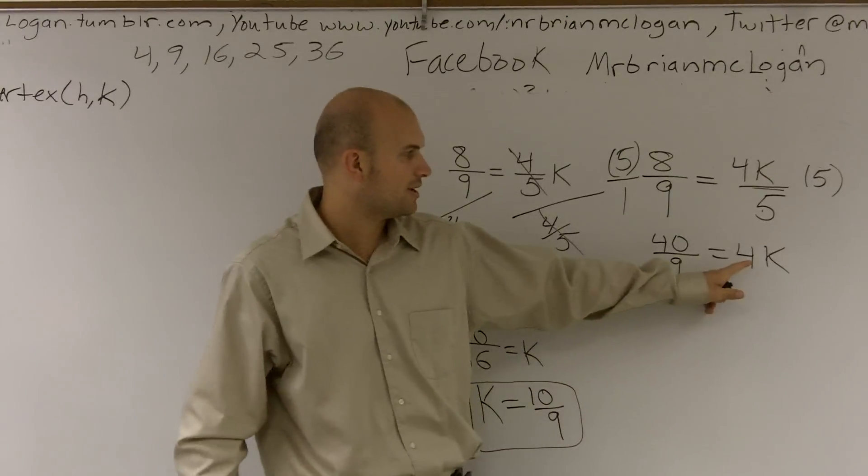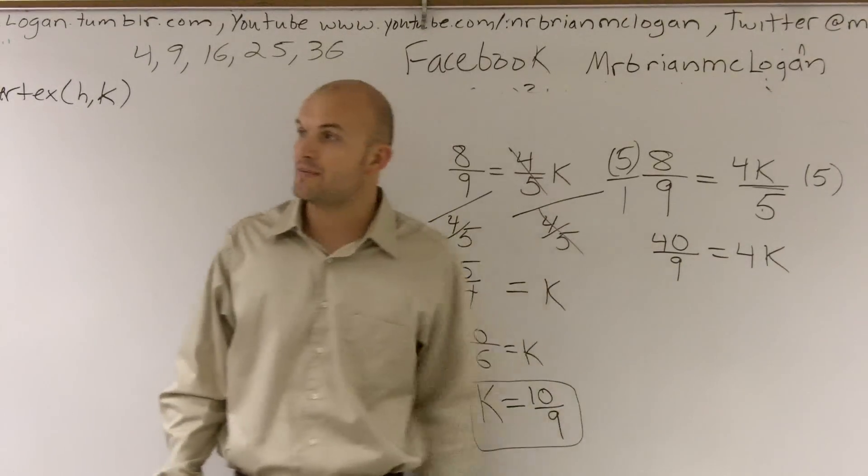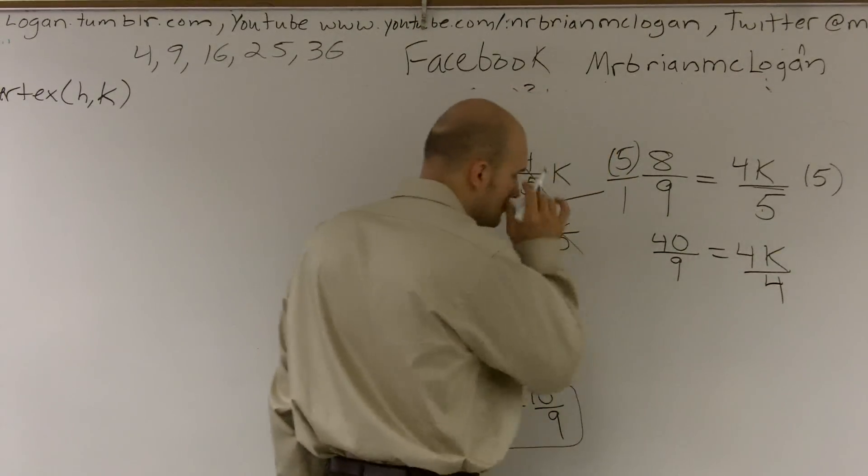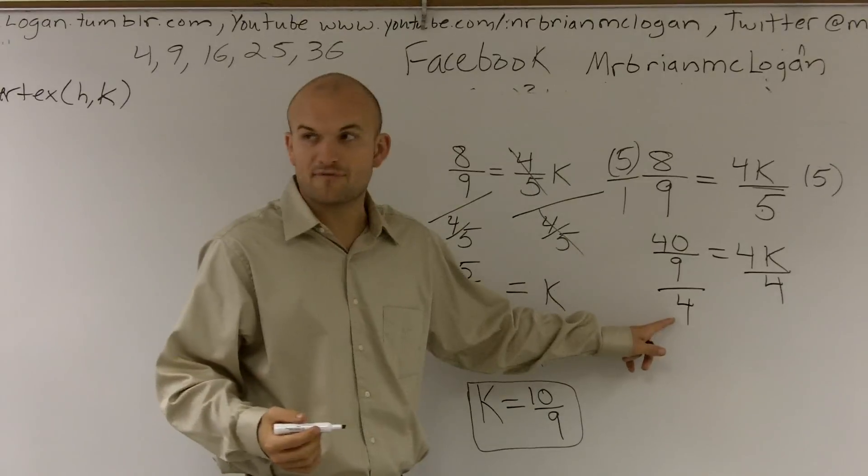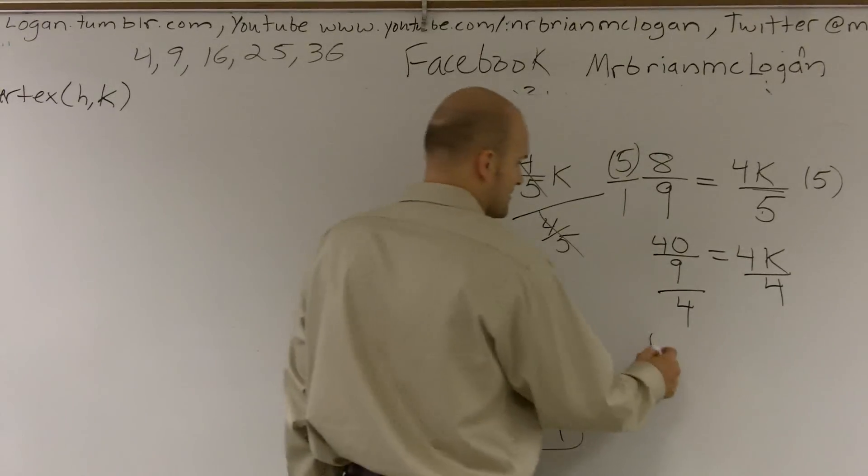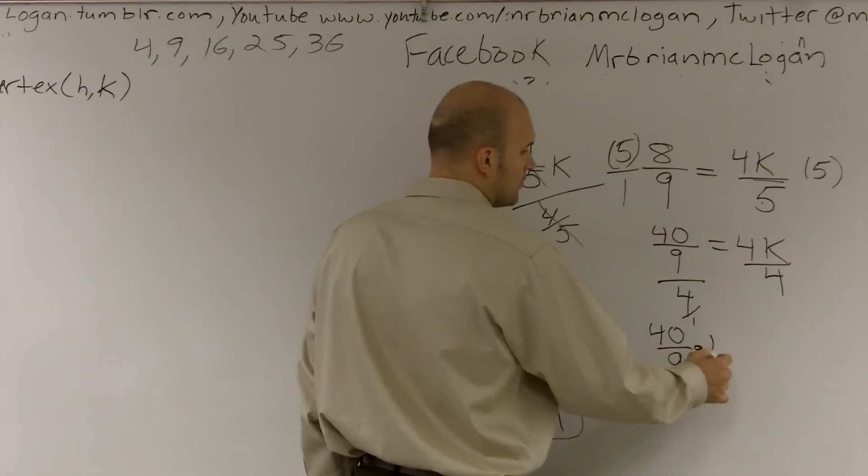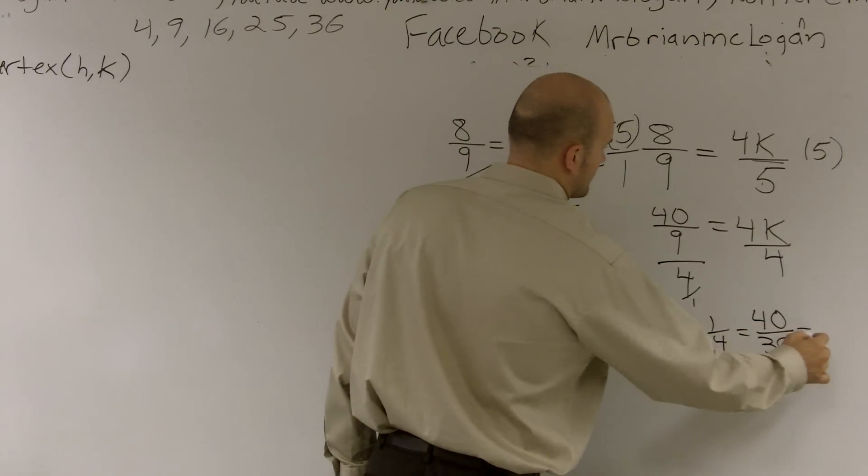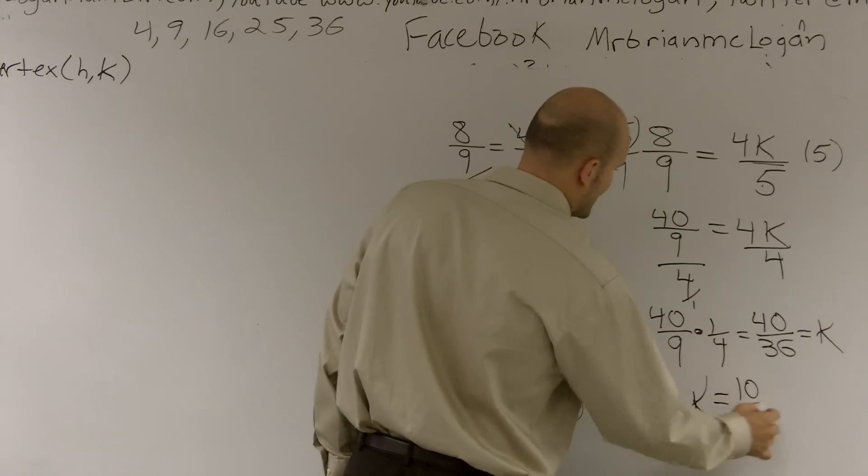And now what we need to do is, now we see what's happening to our variable. Our variable is being multiplied by four. So to undo that, we have to divide by four. And instead of dividing by four, we have to multiply by the reciprocal. So it would be 40 ninths times, what's the reciprocal of four over one? One fourth. And still, my answer is going to equal ten ninths.